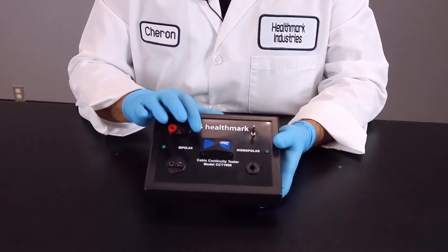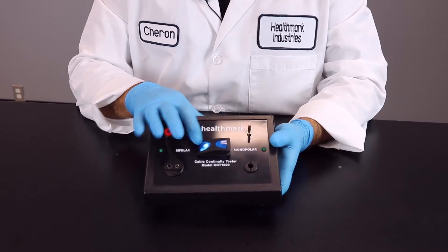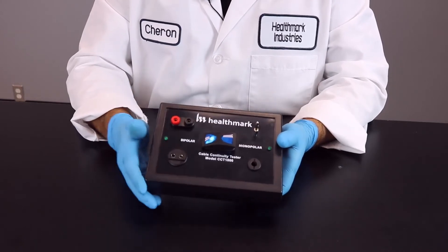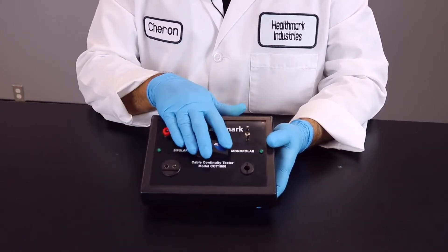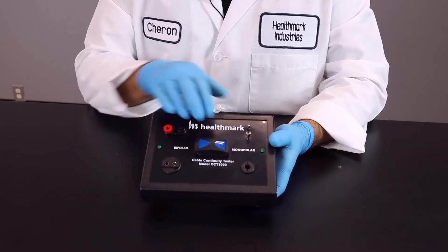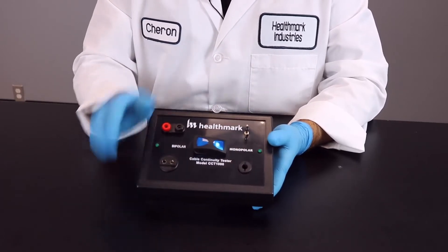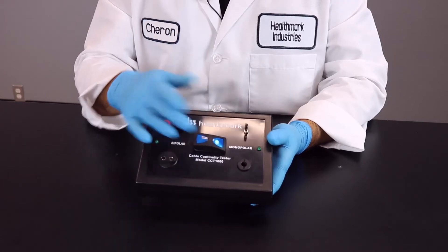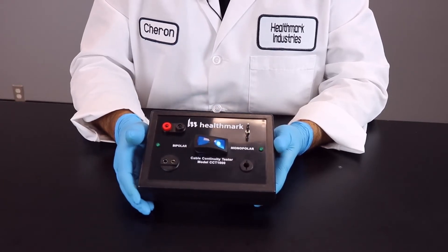In the front, you're going to see a toggle switch that you simply move towards bipolar to test your bipolar cables and cords. In the middle, we'll turn that toggle switch or the unit off. And then you notice here, to test your monopolar, you will toggle the switch to that side.